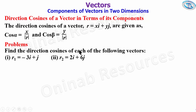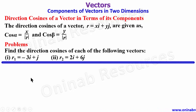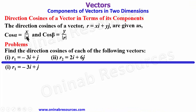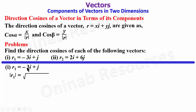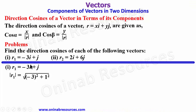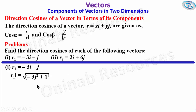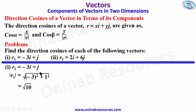Find the direction cosines of each of the following vectors: r1 and r2. We start the solution from r1. First and foremost, we need to find the magnitude of r1. The magnitude of r1 is √((-3)² + 1²). Since the coefficients of i and j are -3 and 1 respectively, this gives us √(9 + 1) = √10.